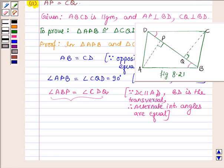And since when two angles of a triangle are equal to the corresponding two angles of another triangle, the third angle is also equal. Therefore, we can say by ASA congruence condition